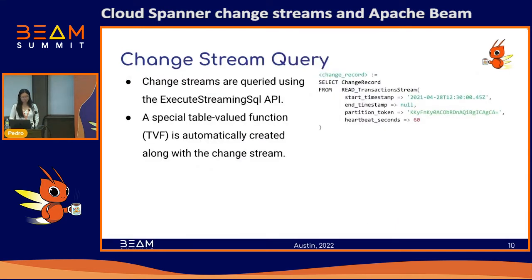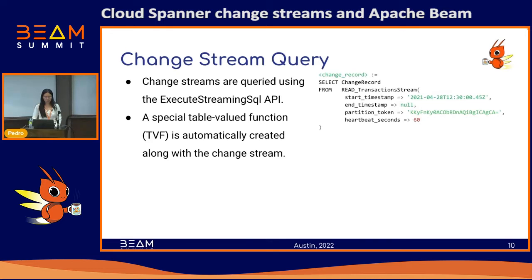The change stream query API: to read change stream data, we use a special table-valued function consumed by the execute streaming SQL API. The name of the table-valued function will be the change stream name prefixed by 'read_'. There are several arguments in the TVF — except for start timestamp, all other arguments are optional. The end timestamp can be in the future, and the start timestamp can be up to the amount of the retention period in the past, for example seven days or one hour.